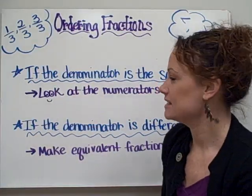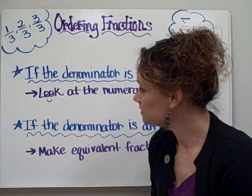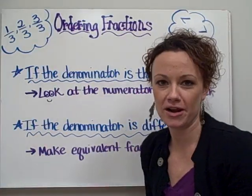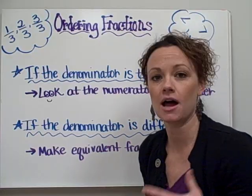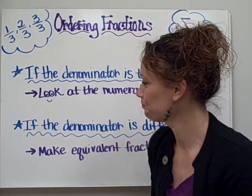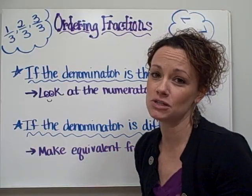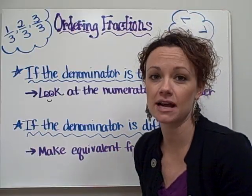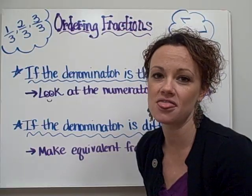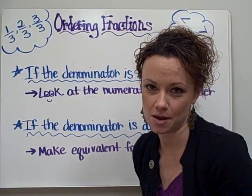If the denominator is the same in all of the fractions, then all you need to do is look at the numerators and order them depending on however they tell you to order them. But if the denominators are different, you need to do a few extra steps first. You need to create equivalent fractions and then you can order them based on the numbers in the numerator.